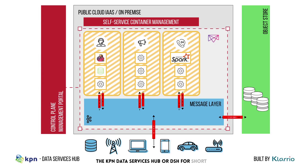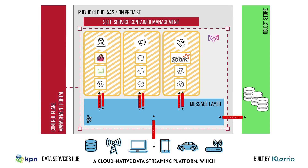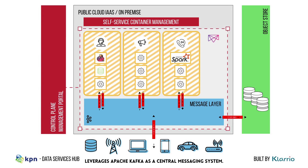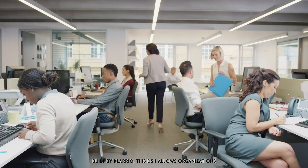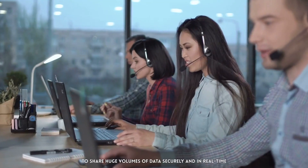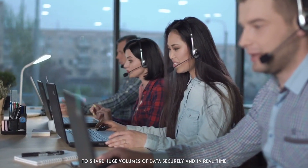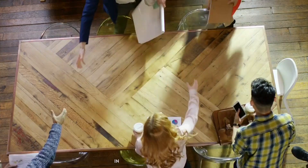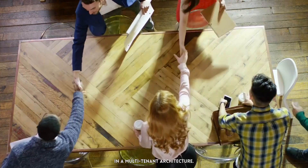The KPN Data Services Hub, or DSH for short, is a cloud-native data streaming platform which leverages Apache Kafka as a central messaging system. Built by Clario, this DSH allows organizations to share huge volumes of data securely and in real time in a multi-tenant architecture.